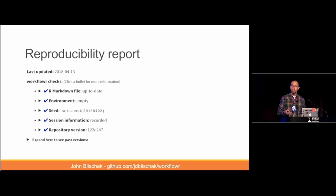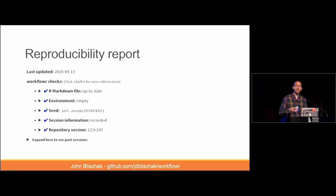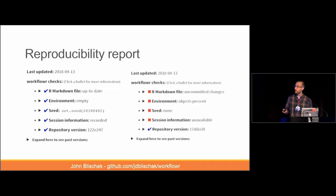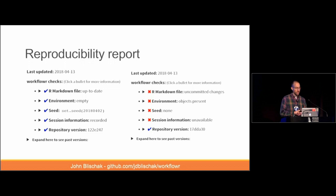To communicate all the reproducibility features going into the generation of the website, WorkflowR inserts a reproducibility report at the top of each page. Each check has a blue checkmark and a quick blurb about what it means, and if you click on any bullet point it gives a more detailed description. This way someone visiting your research website can see all the checks that ensure it's reproducible. Similarly, if you see a red X, there's a warning that something went wrong — maybe the seed wasn't set or your R Markdown file wasn't committed — and clicking on it will tell you what happened and how to fix it.